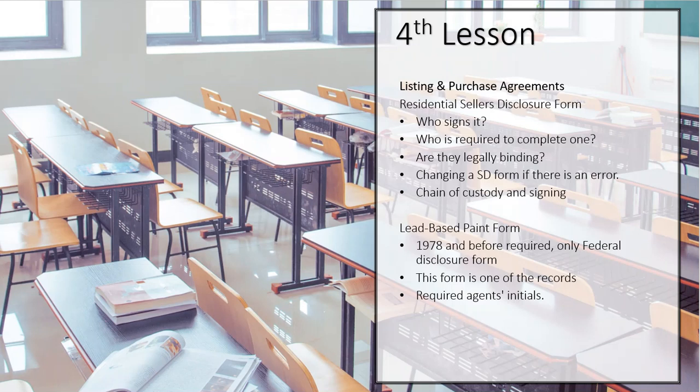Under the new purchase agreement rules, anything that is now disclosed to the buyer prior to him making an offer is not liable to be the subject of a reason for the buyer to get out of the deal. So if the seller tells the buyer, hey, the roof is bad — it's got 27 layers on it — and the buyer still makes an offer anyway, the buyer cannot use that information as a reason to get out because it was disclosed to them.